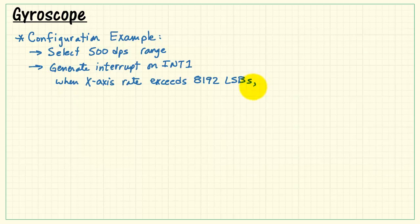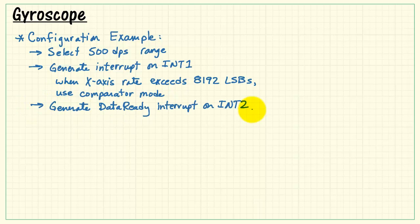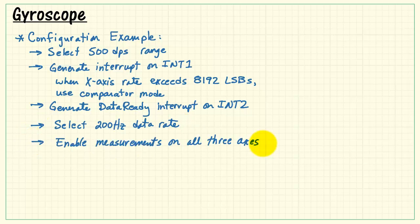All right, let's work through a detailed configuration example. I want to select the 500 DPS range, generate an interrupt on interrupt output number 1 when the x-axis rate exceeds 8192 least significant bits, and using comparator mode. We want to generate data-ready interrupt on int 2 output, select a 200 Hz data rate, and then enable measurements on all three axes.